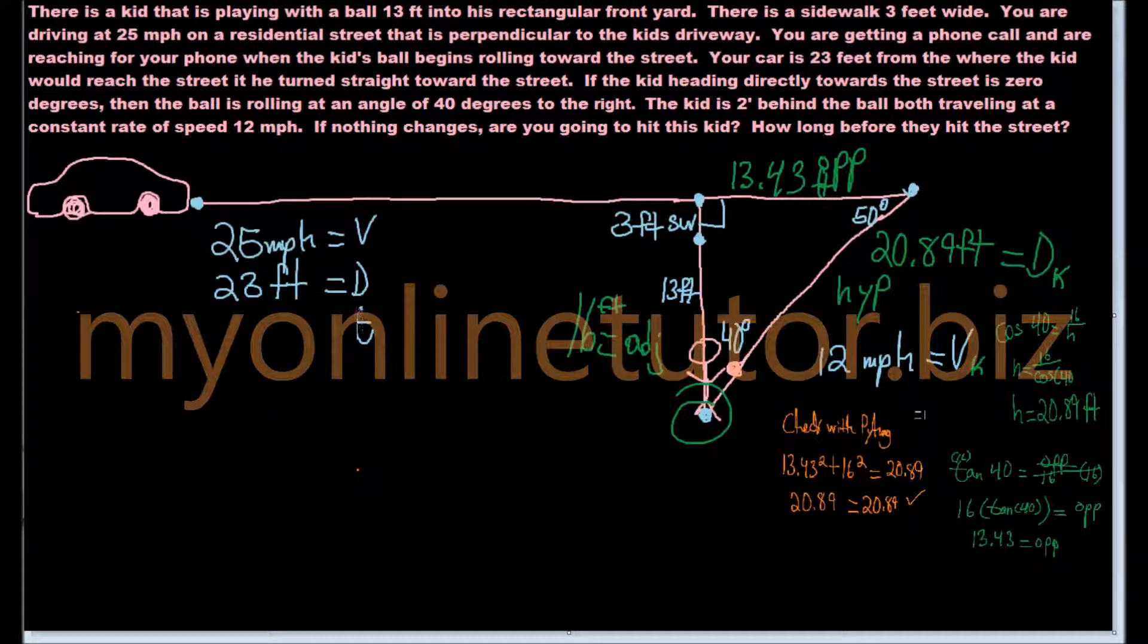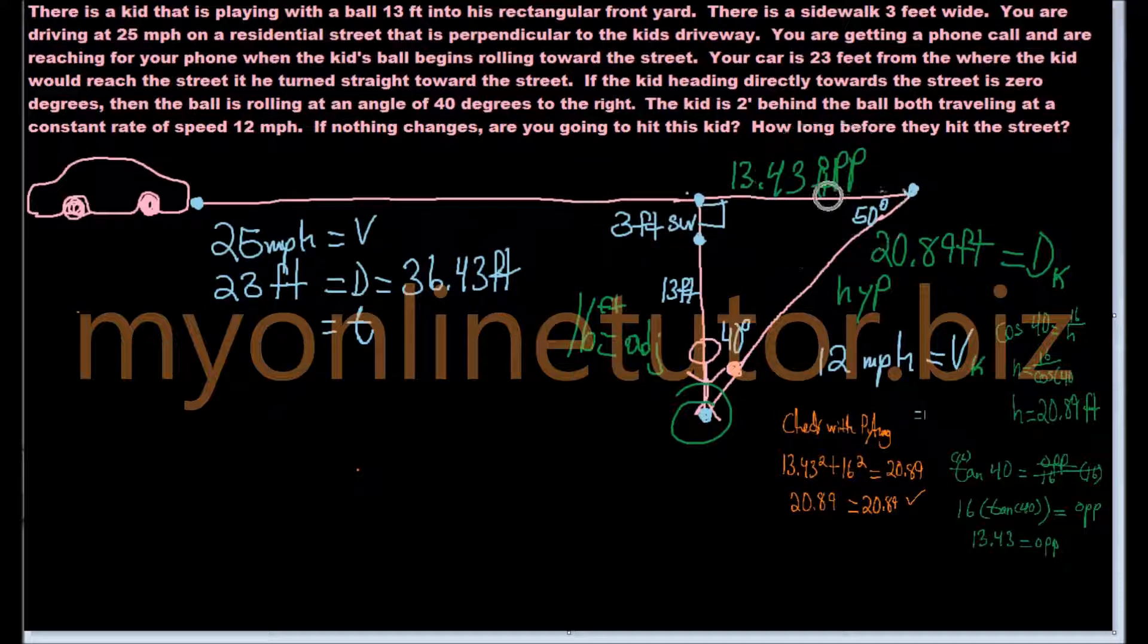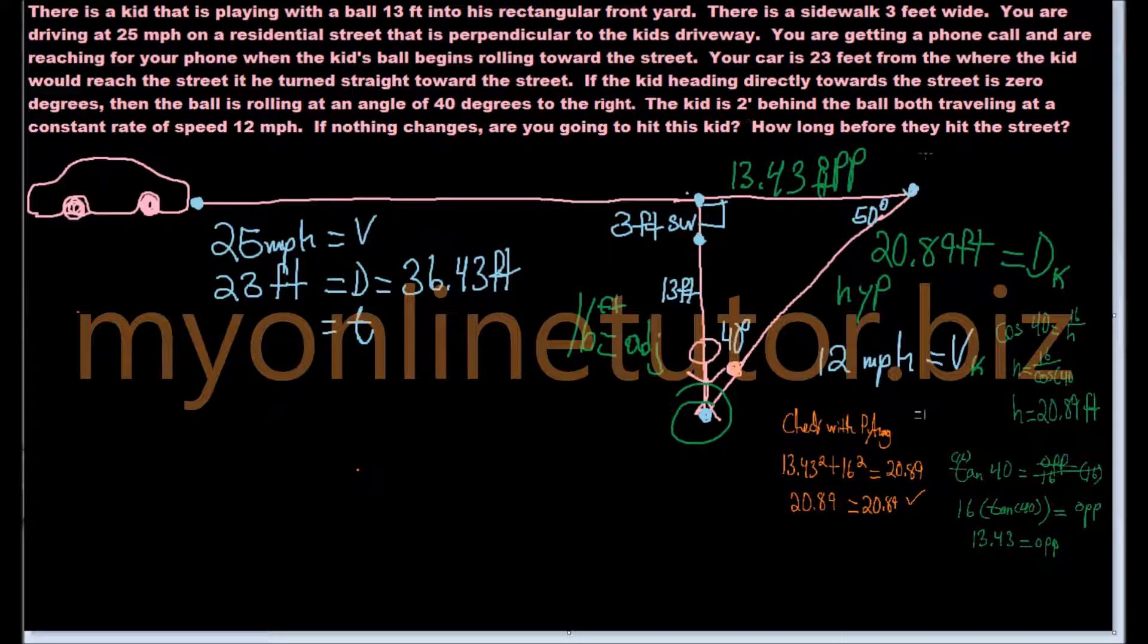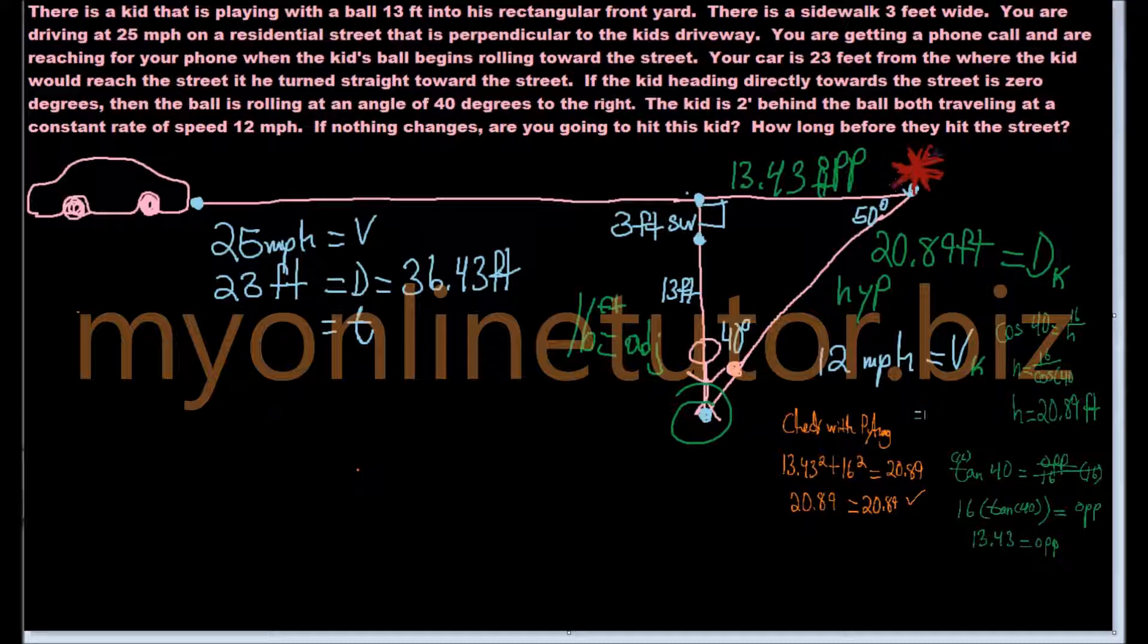Now that you have the distances filled in for the size of the triangles, you can insert this back into your diagram. Let's go on and note that you have the car, which needs to travel through the point where the kid would hit the street if you turned directly towards it, and the point that's to the right of the kid where the ball is going to hit the street, and that's also going to be where the kid is going to hit the street. So the car needs to get to that point as well as the kid needs to get to that point. You know what distance, you know what angles. And the thing is, do they get there at about the same time?